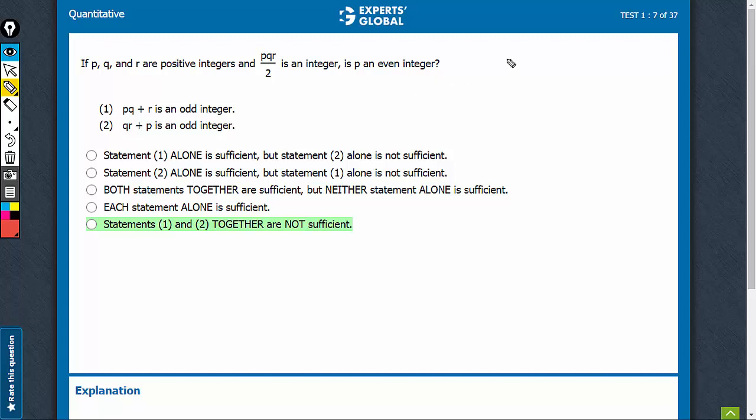PQR upon 2 is an integer. That means out of PQR, at least 1 is even. Maybe 2 are even, maybe all 3 are even, nothing can be said, but at least 1 is definitely even.